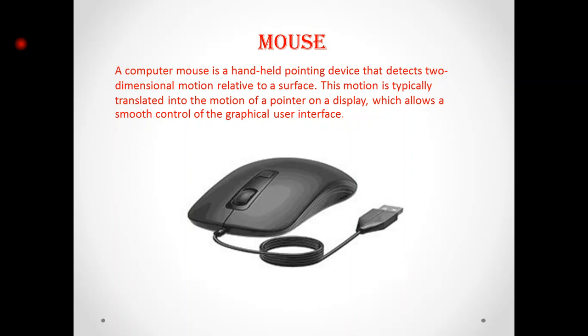Mouse is an input device which is used to click icons and open or execute programs. Mainly a mouse has three buttons: first is left click, second is right click, and third is the scroll button.